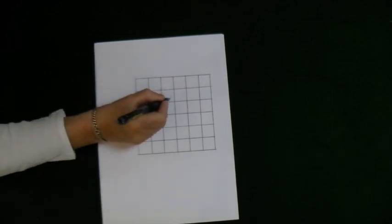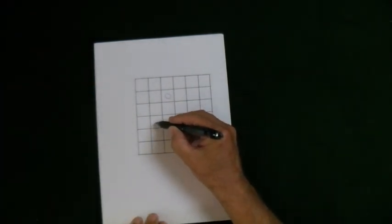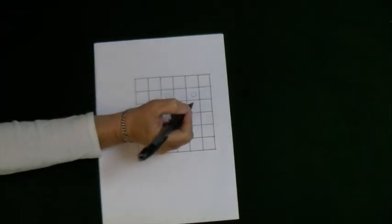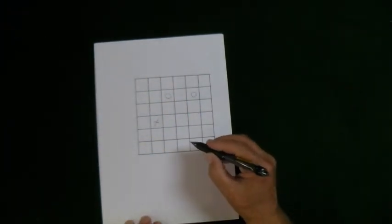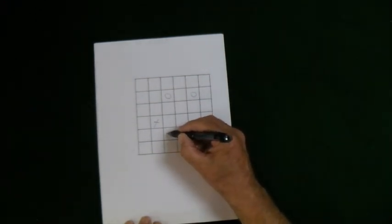OK, I'm going to start with my nought there. I'm going to put my cross there. My next nought is going to be there. I'm going to put my cross here.